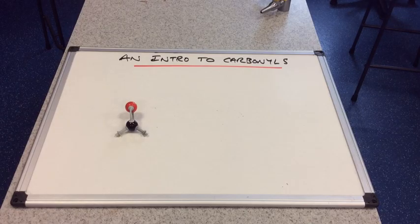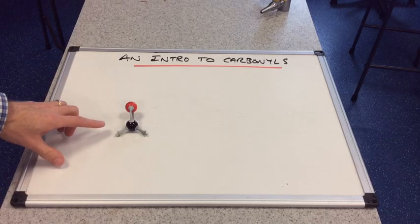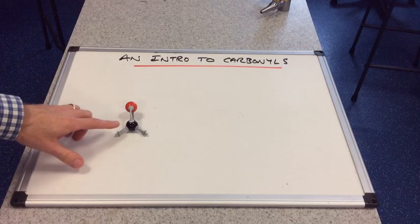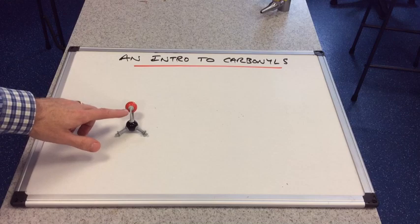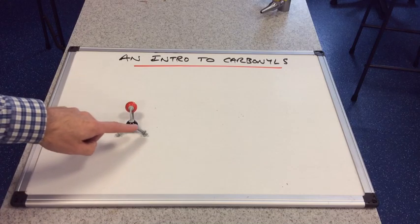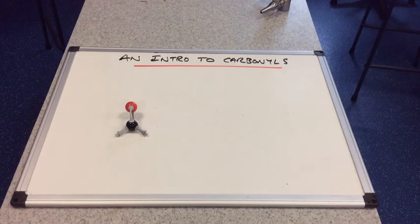There's the molecular model kit showing the carbonyl group. We've got this C double bond O, and obviously carbon can make four bonds. We've got the two bonds making this double bond and two further bonds that can come off this carbon.